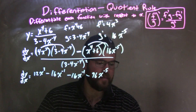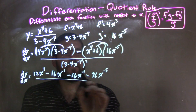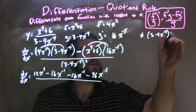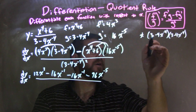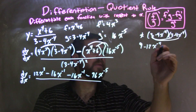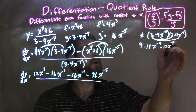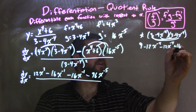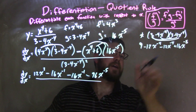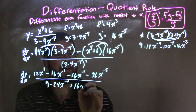Let me double-check: 6 times 16 is 96 — yes. Now for the denominator: 3 minus 4x to the negative 4th, times 3 minus 4x to the negative 4th. 3 times 3 is 9. 3 times negative 4 is negative 12x to the negative 4th. Negative 4 times 3 is another negative 12x to the negative 4th. Then negative 4 times negative 4 is positive 16x to the negative 8th power.